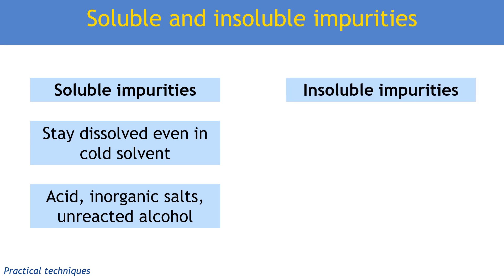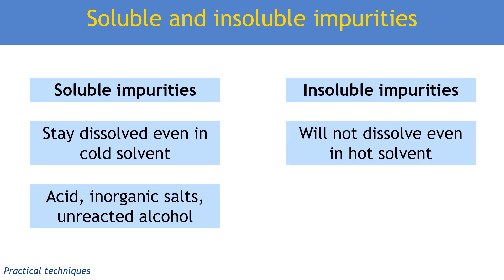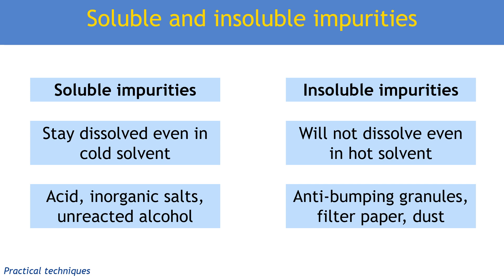We could also have insoluble impurities. Insoluble impurities are things that got into the reaction mixture by accident — things that will not dissolve even when the solvent is hot. We could have accidentally got some anti-bumping granules from our reflux flask if we did a reaction under reflux.